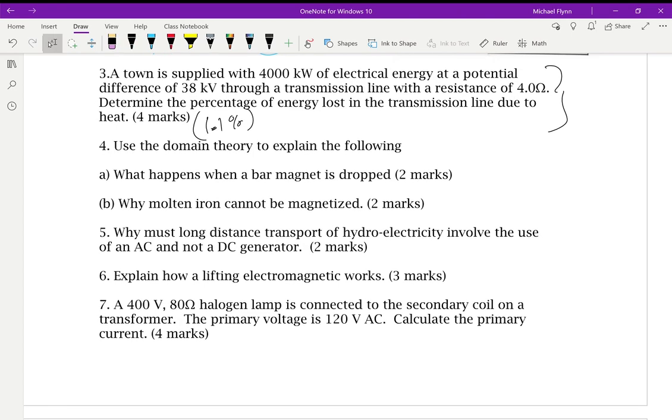Use the domain theory to explain what happens when a bar magnet is dropped. So, when the domains in a bar magnet tend to be aligned, then you drop it, or hit it, or whatever, and they go from that to this, where they're random. So, this is after a drop. So, that's what happens, and it becomes a weaker magnet as a result.